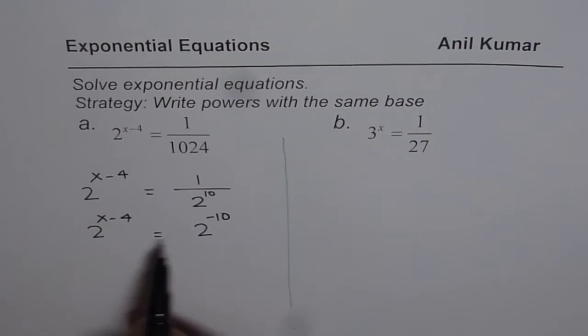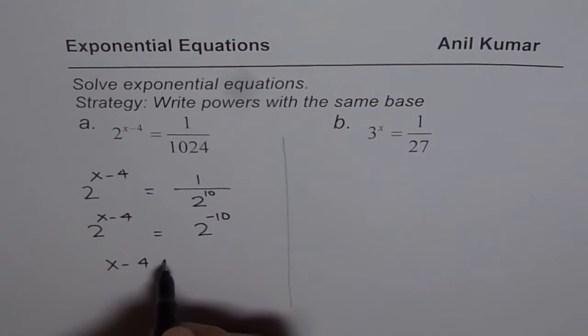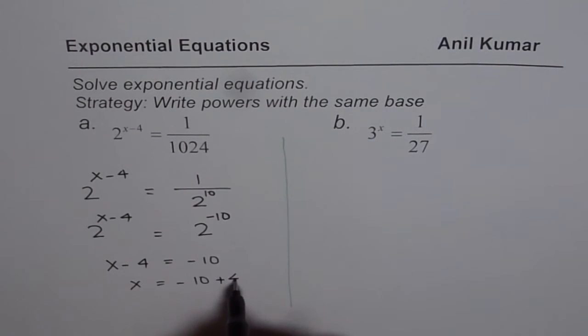Once you write both sides with the same base, then exponents should be equal. So x minus 4 should be equal to minus 10, or x is equal to minus 10 plus 4. That gives you minus 6 as your answer.